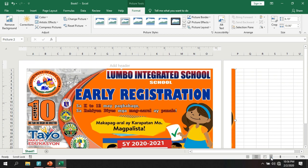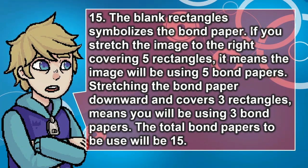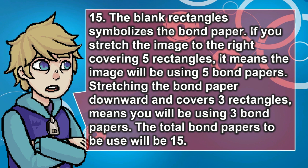The blank rectangles symbolize bond papers. If you stretch the image to the right covering five rectangles, it means the image will be using five bond papers. Stretching the image downward and covering three rectangles means you will be using three bond papers. The total bond papers to be used will be 15.